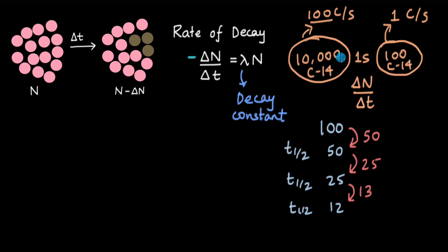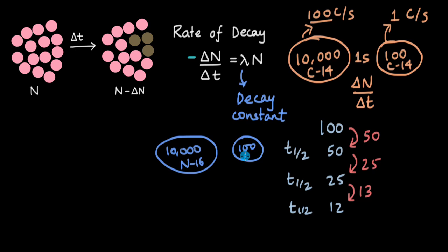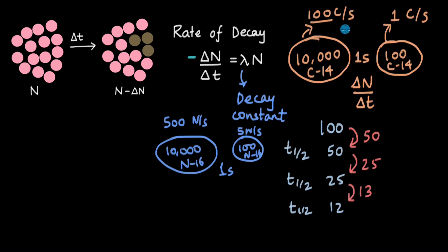To understand what different values of lambda tell us, consider two groups: 10,000 and 100 nitrogen-16 atoms. If lambda is greater for nitrogen-16 than for carbon-14, it's possible that in one second, 500 decays occur from 10,000 nitrogen-16 atoms, and 5 decays per second from 100 atoms. Compare this to carbon-14 whose decay constant is less — fewer decays happen per second.